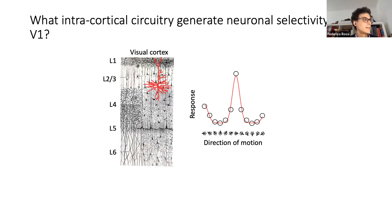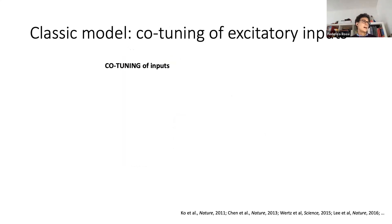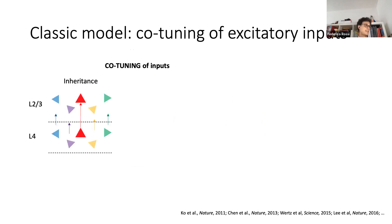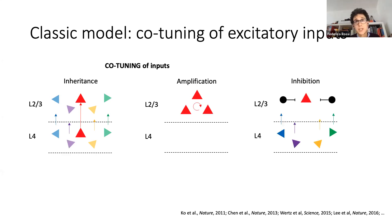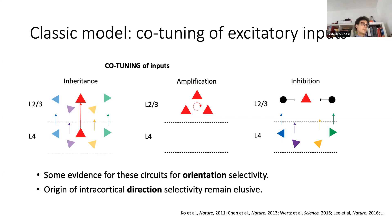As you've heard from Elisabetta, these neurons respond selectively to gratings of specific orientations moving in specific directions. The circuit models usually used to explain layer 2/3 tuning are based on the co-tuning of excitatory inputs. Selectivity could be derived from similarly tuned inputs from layer four, or could be refined and amplified by recurrent co-tuned connectivity in layer 2/3. Further mechanisms might involve inhibition, like inhibition to anti-preferred stimuli. Previous studies found evidence supporting orientation selectivity, but the origin of intracortical direction selectivity remains unclear.